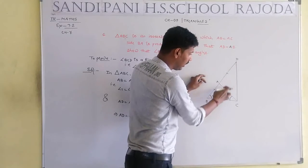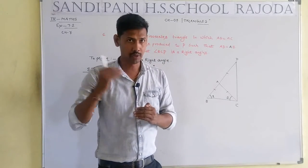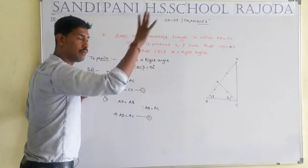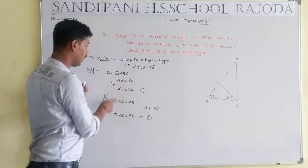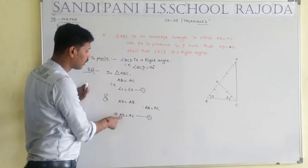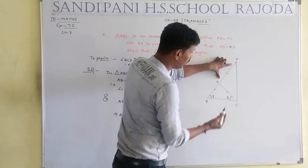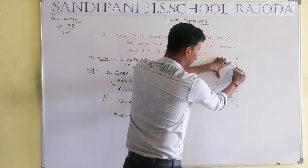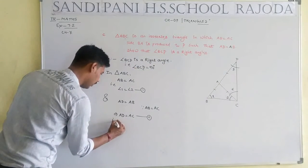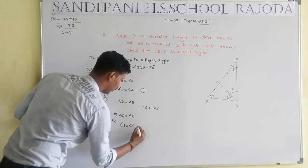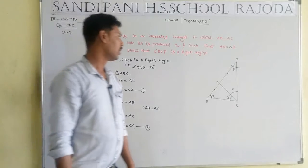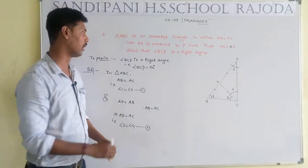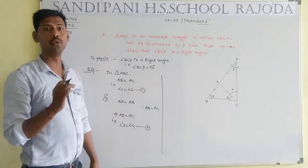Think of it this way: AB equals AC, and AD equals AB, so indirectly AD also equals AC — just like if Ram is a brother of Shyam and Ram is a brother of Mohan, then all three are brothers. In triangle ADC, two sides are equal, so angle 3 equals angle 4 — equation number 2.